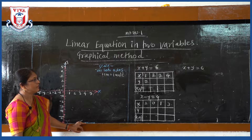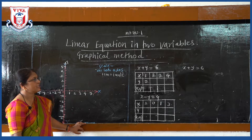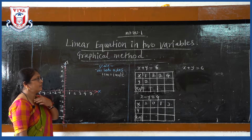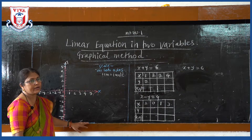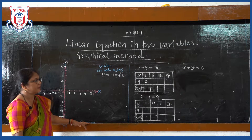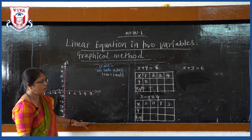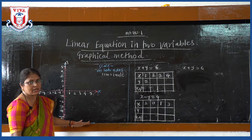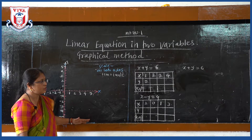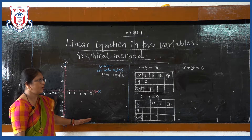Now, graphical method of solving the simultaneous equation. The graph of the linear equation in two variables is always a line. In the graphical method, for the given equations we need to find at least 3 to 4 coordinates. We can draw the graph with 3 points, but for more perfection, find out four ordered pairs of the coordinates.